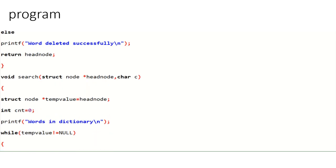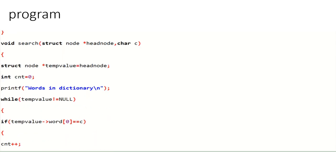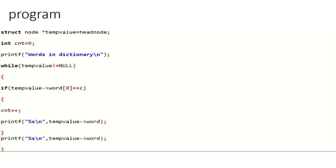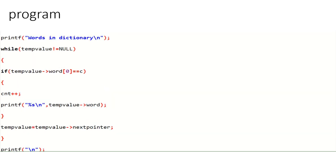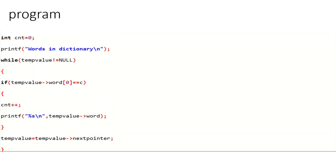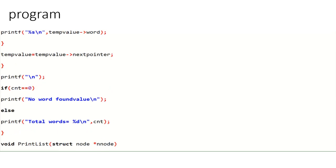Next is the search operation. The function void search takes the struct head node and a character parameter. It searches from the starting node so a temp pointer is used. An integer cnt is initialized to zero. It prints the words in the dictionary. While temp's value is not equal to null, it iterates through the list and cnt is incremented to find the search value.